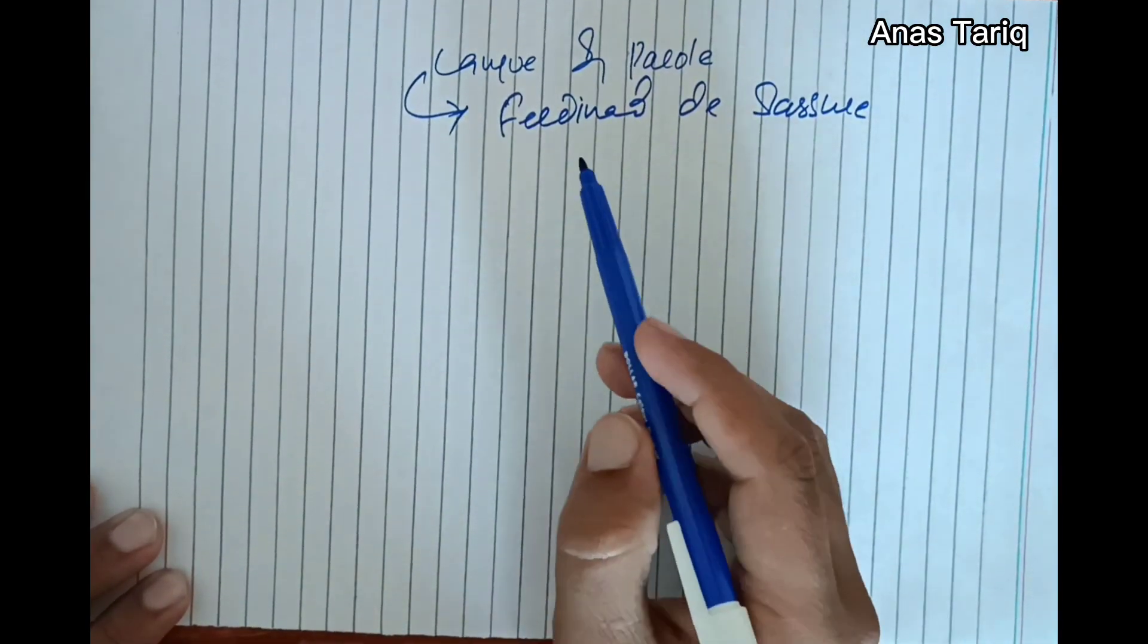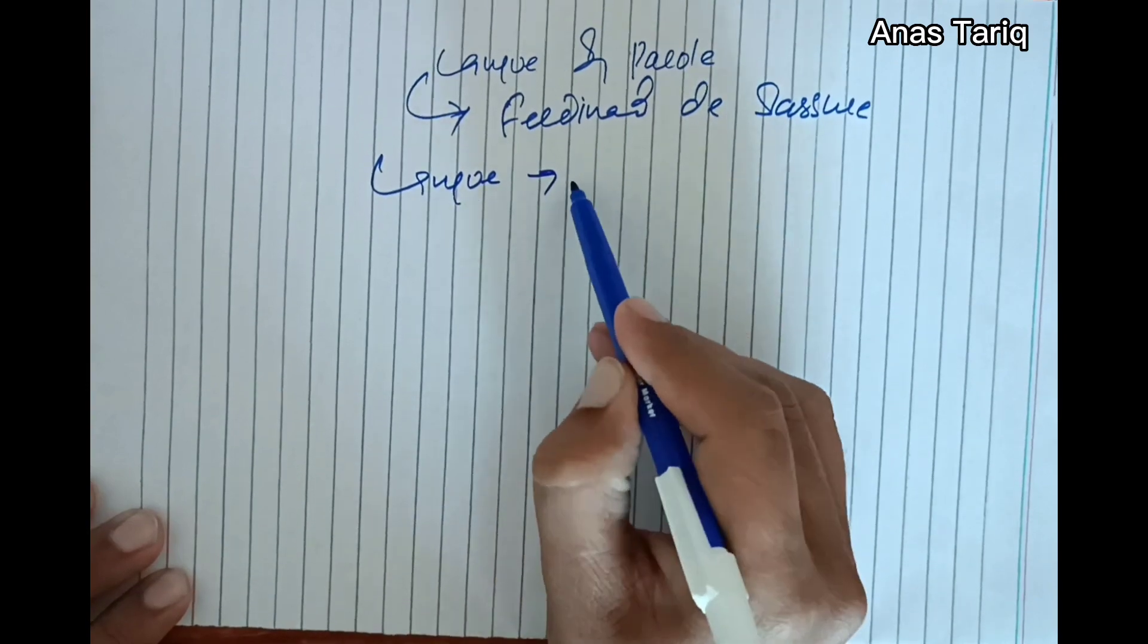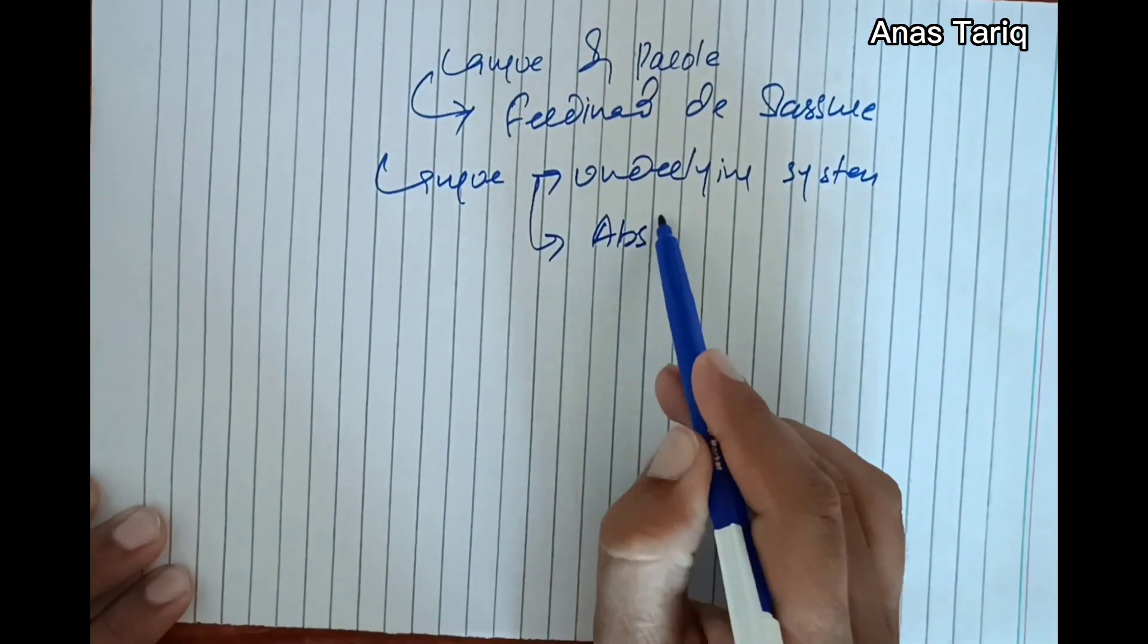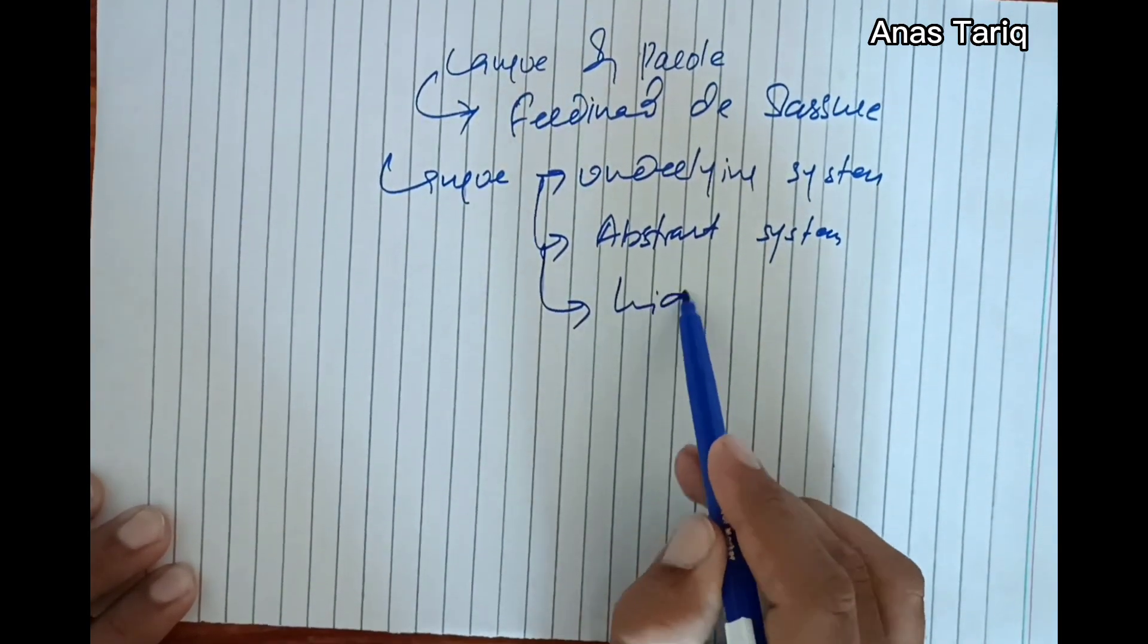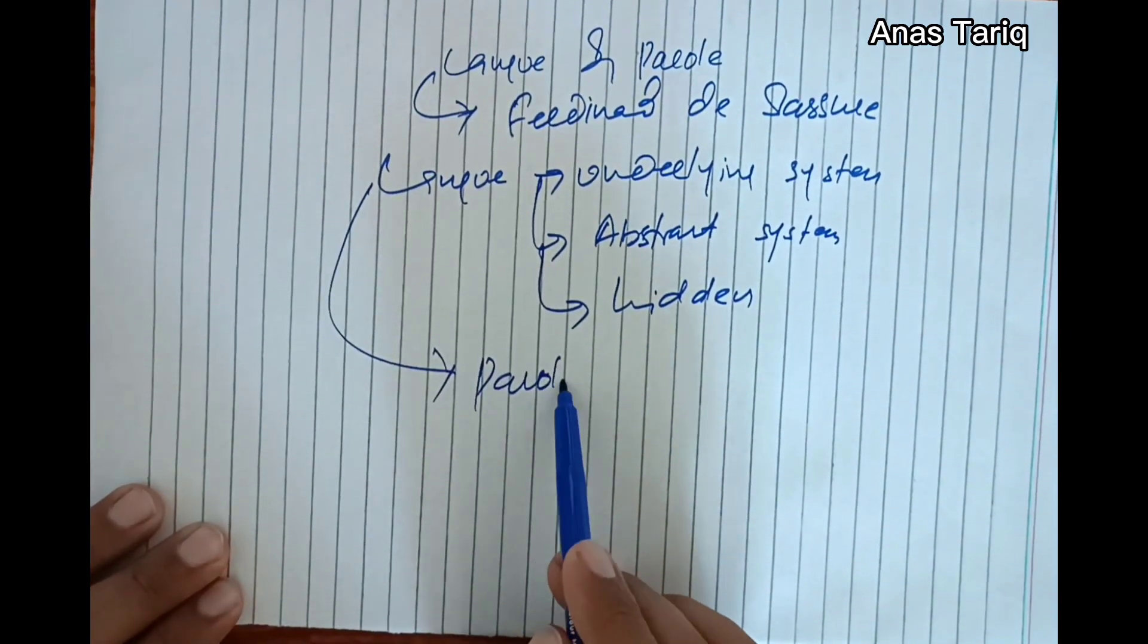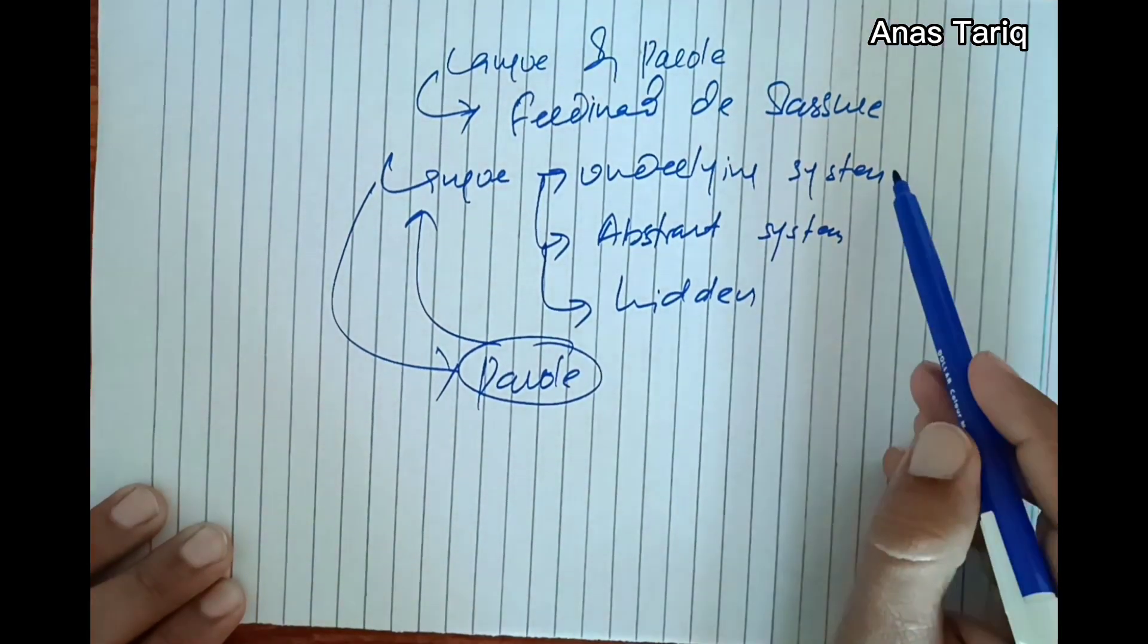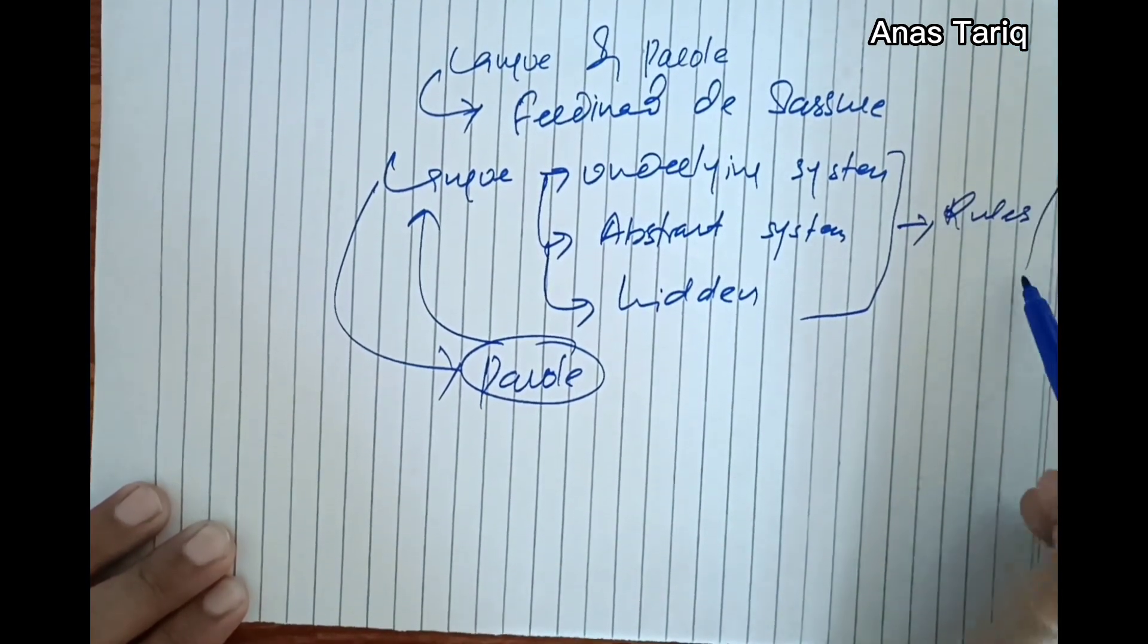In his theory of structural linguistics, Langue refers to the underlying system. This is an abstract system, this is hidden, and this system works behind Parole. So Parole is basically a realization of Langue. This Langue is made up of rules and conventions of language.